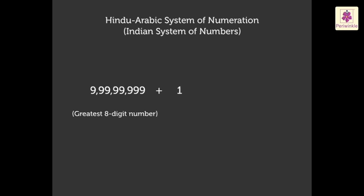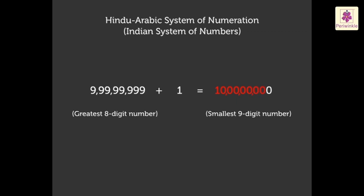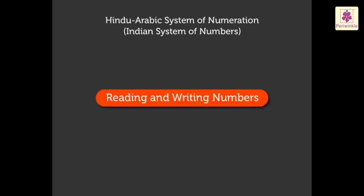The greatest eight digit number is nine crore, ninety nine lakh, ninety nine thousand, nine hundred and ninety nine. When one is added to it, we obtain the smallest nine digit number. Now, let us learn to read and write numbers using the Hindu-Arabic system.